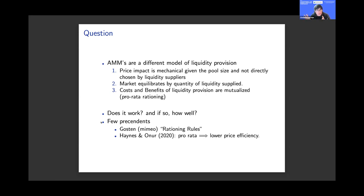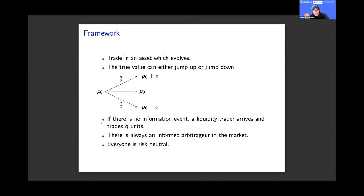When people deposit their Ethereum and token to supply liquidity in return for a liquidity token, all liquidity supply is fungible — all costs and benefits of supplying liquidity are mutualized across all participants. One way of translating this back into a limit order market context is to think of this mutualization as almost a form of pro-rata rationing, which is something we don't commonly see in markets.